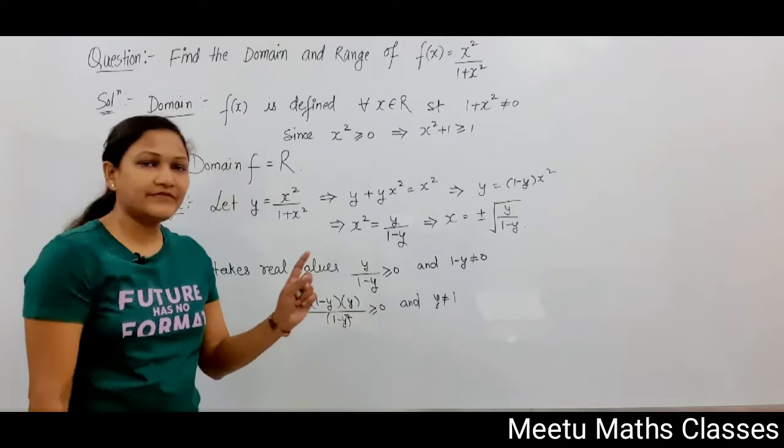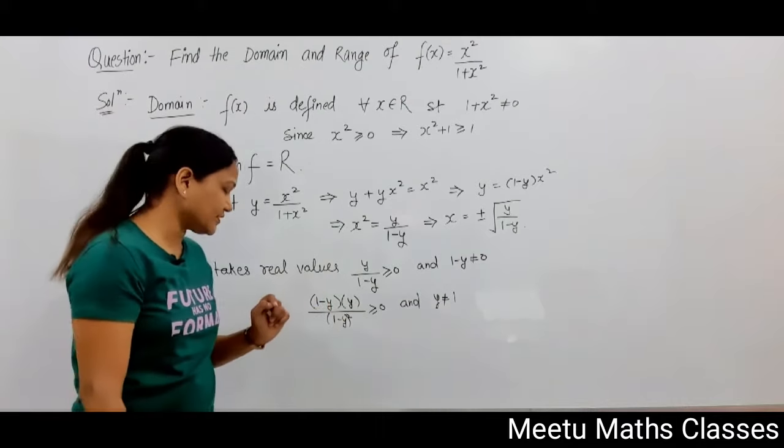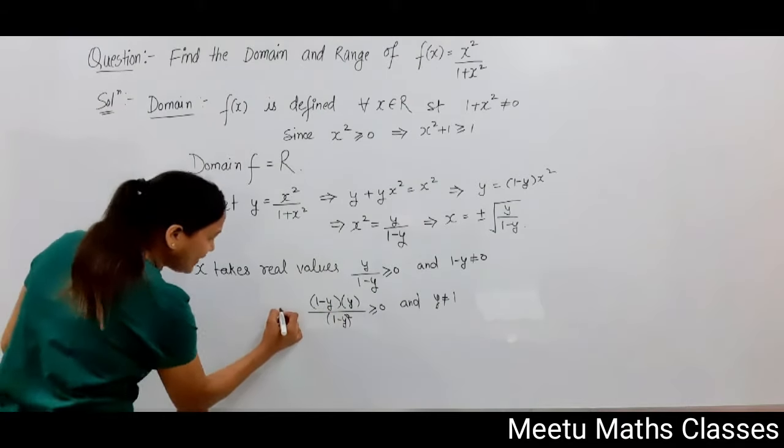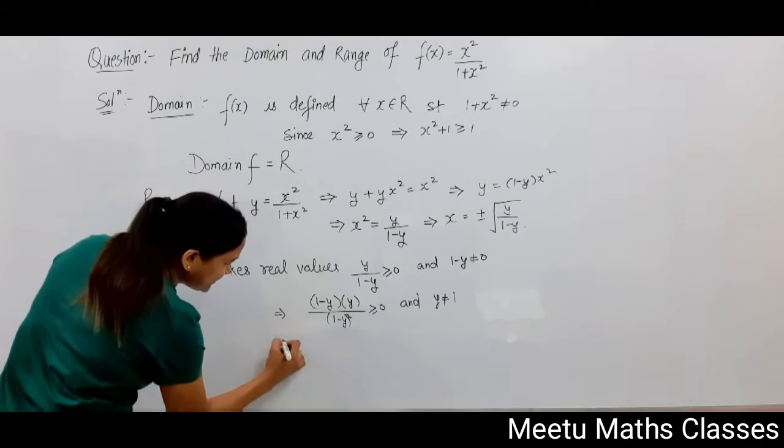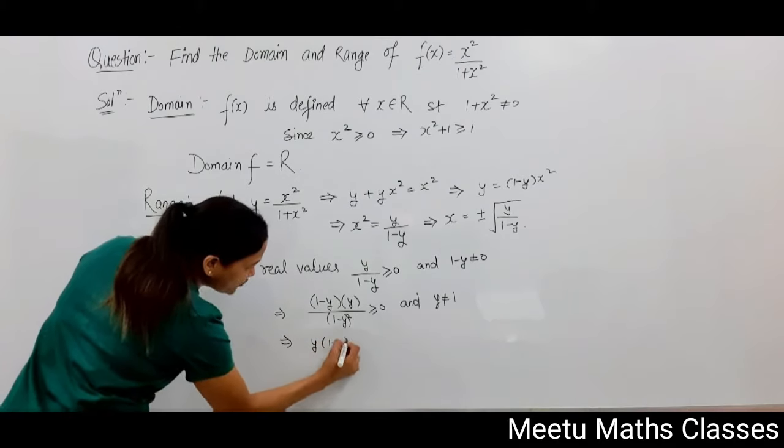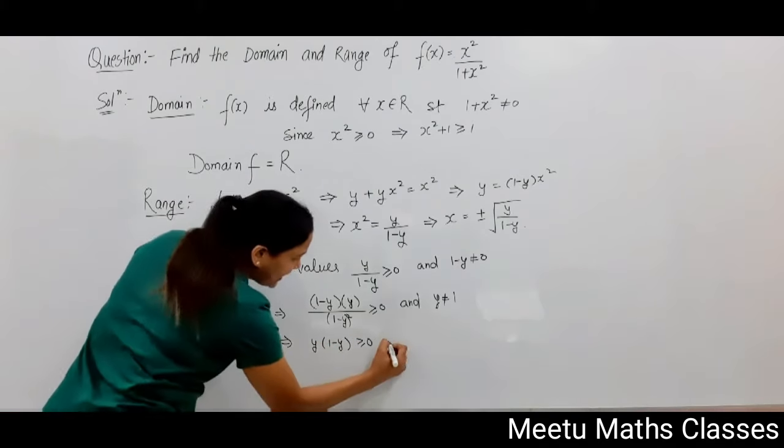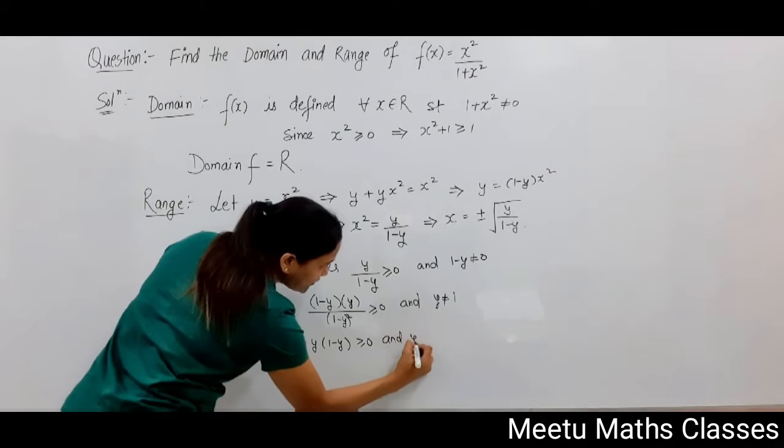Now the denominator, the square of anything, is always positive. So we have to just verify that y(1 - y) should be positive and y should not equal 1.